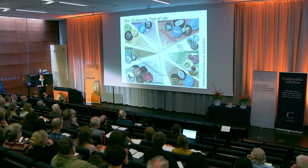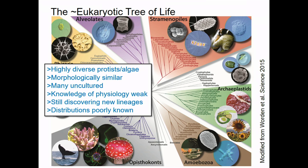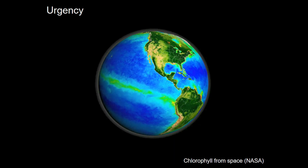Each of these groups is as divergent from each other as they are from us — represented over here by a whale. We're talking about massive diversity. Some are photosynthetic, and some are heterotrophic predators, osmotrophs, or many other things. They're highly diverse protists and algae in the oceans; some are morphologically similar, making them difficult to study in the field. Many are uncultured, so knowledge of physiology is typically quite weak. We're still discovering new photosynthetic lineages, and distributions are poorly known — not a good state of affairs given conditions we impose on our ocean today.